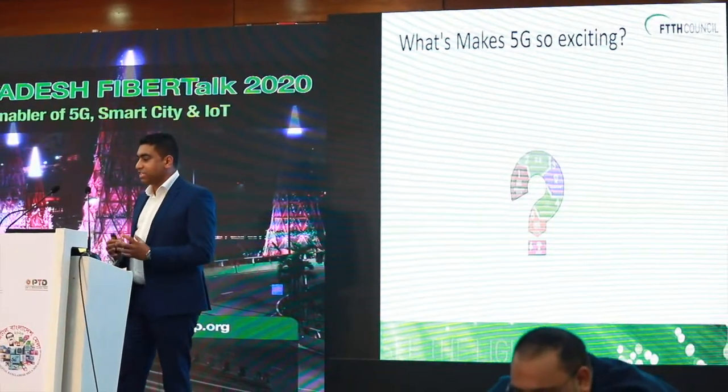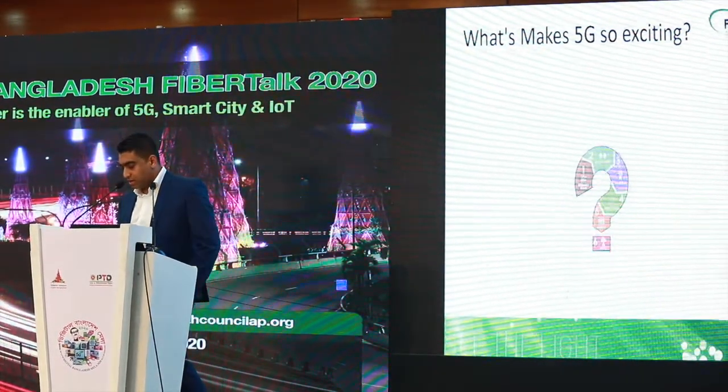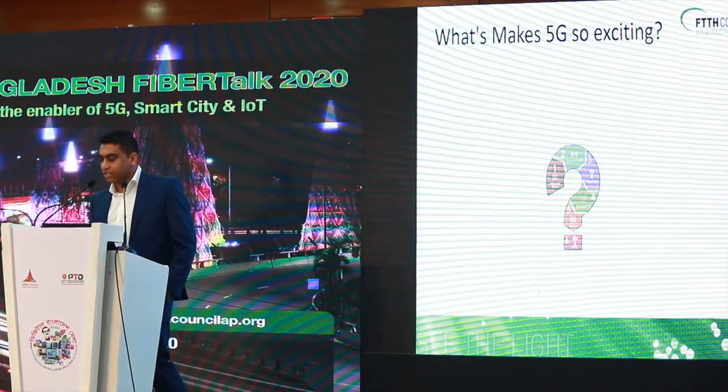Why is 5G so exciting? Number one is millimeter wave. Number two is massive MIMO. Number three is small cell. Number four is beamforming. Number five is NOMA — which means Non-Orthogonal Multiple Access. It sits within the core network at an application level, so not very relevant to the topic today. And then number six is MEC — Mobile Edge Computing.